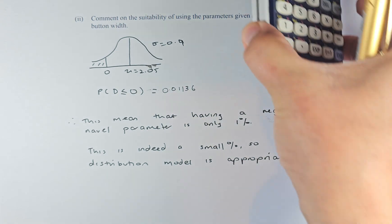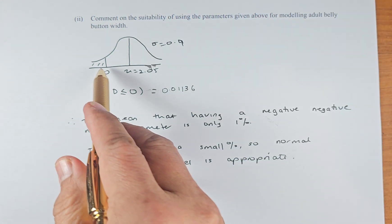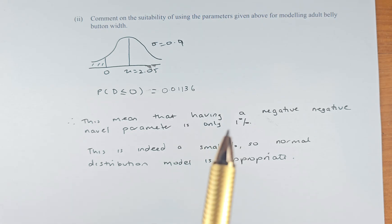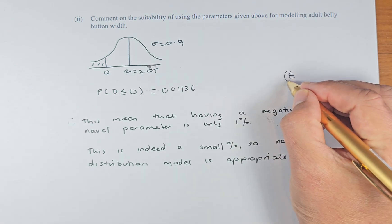So this is indeed a very small percentage. So I would say that normal distribution model will be appropriate because if the number, the percentage is negative, then it can't be worked out. In fact, it's only a small number, only 1.1%. So it's acceptable and you can answer that. That's excellent.